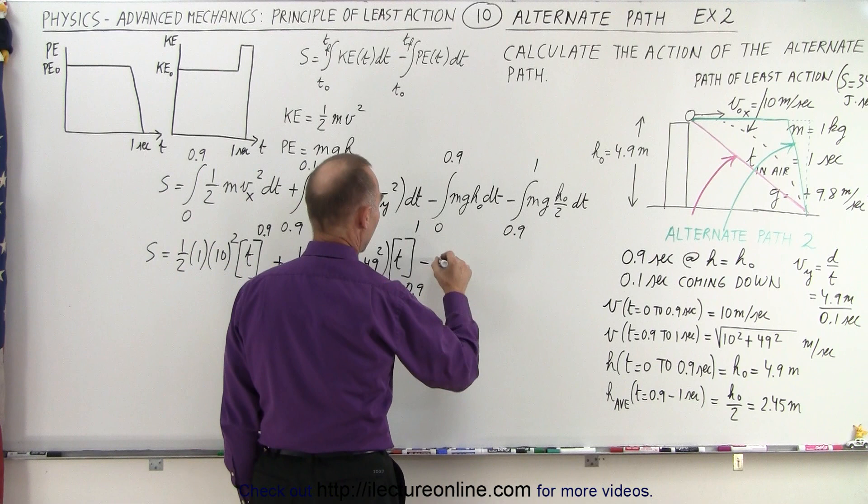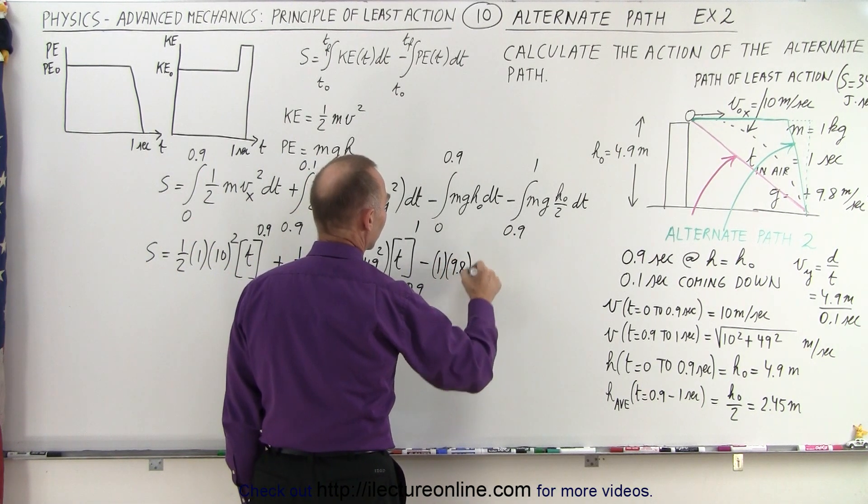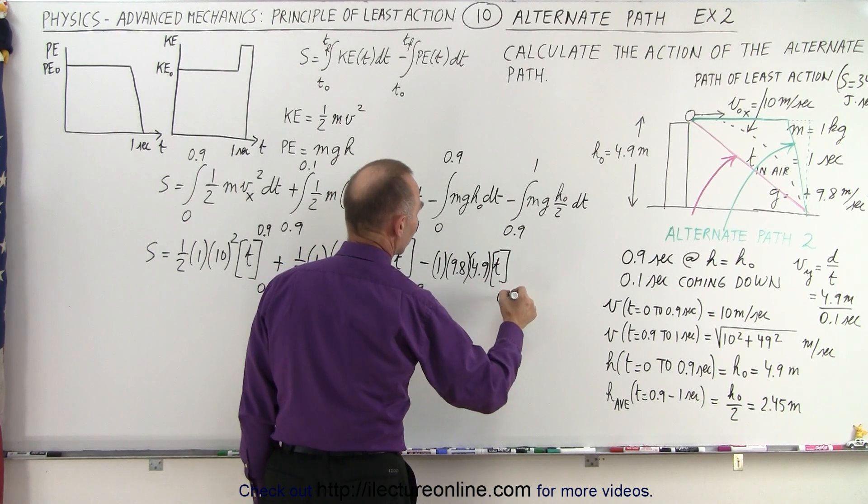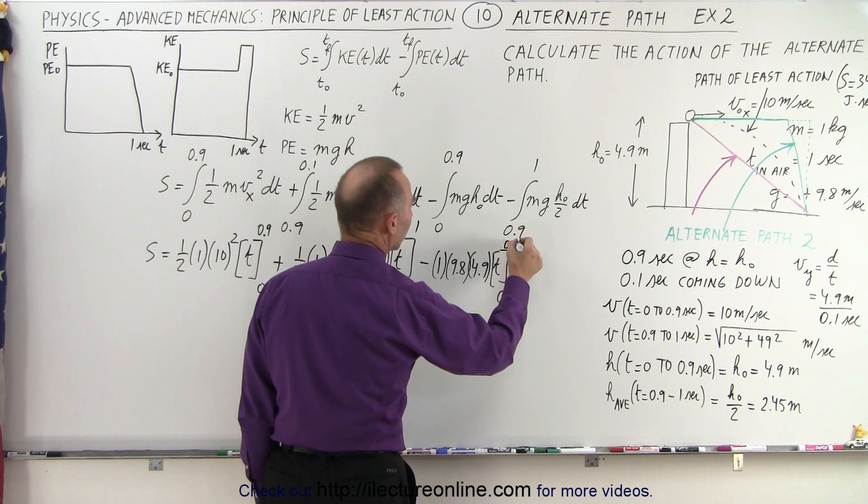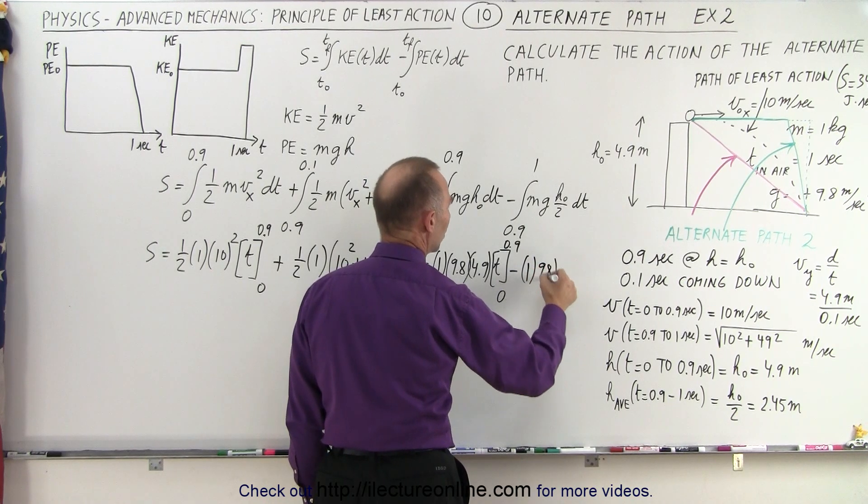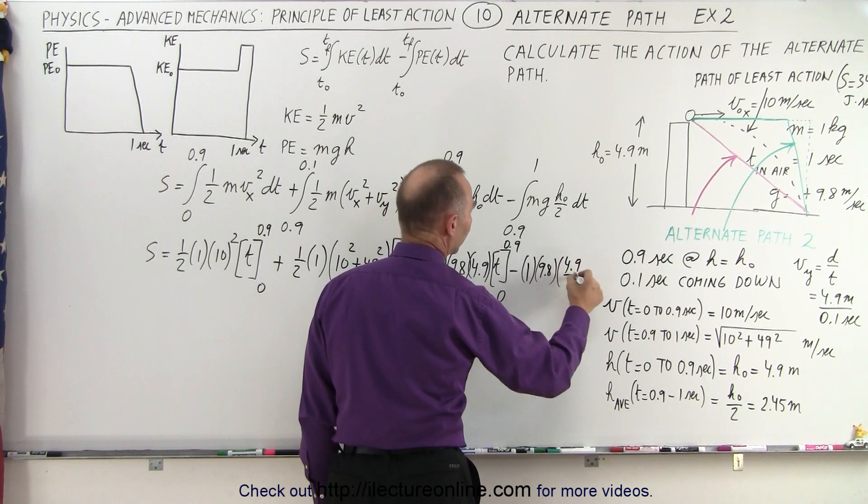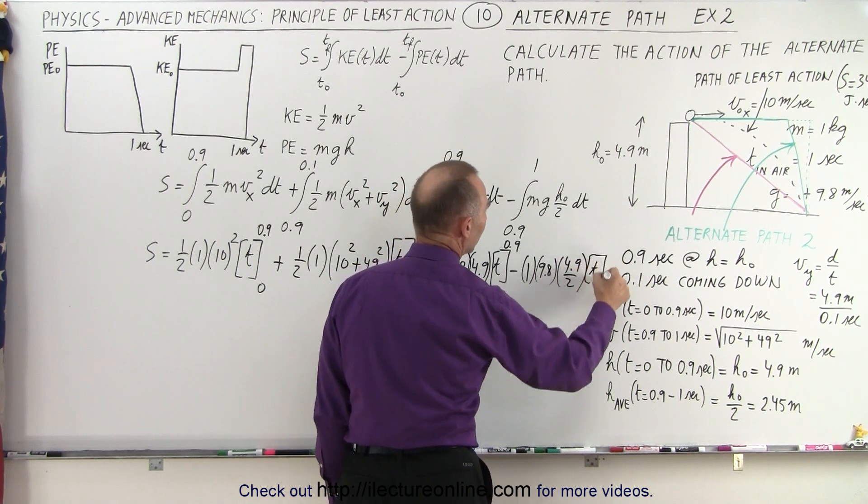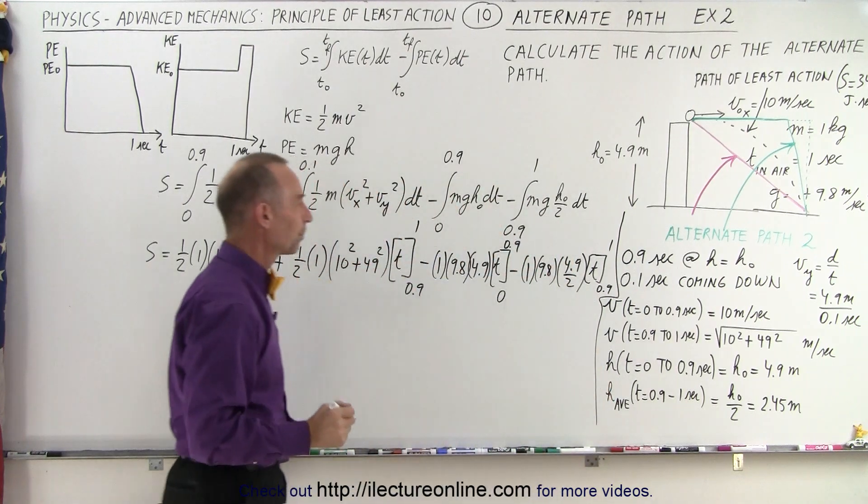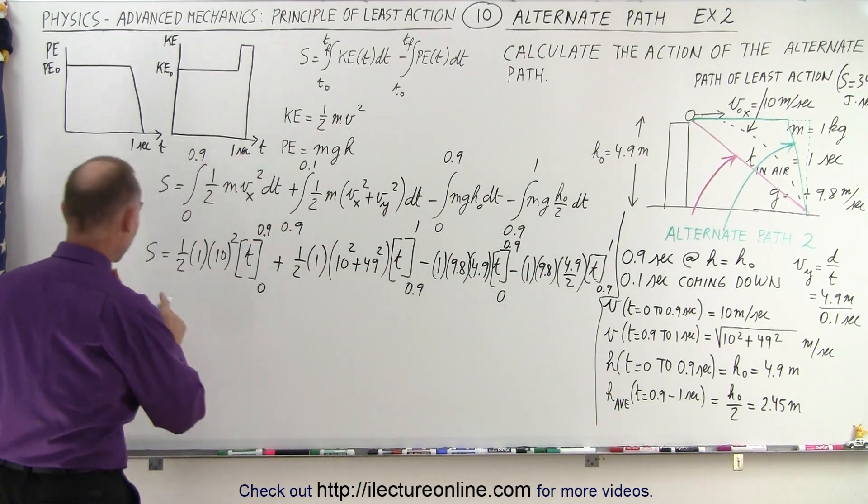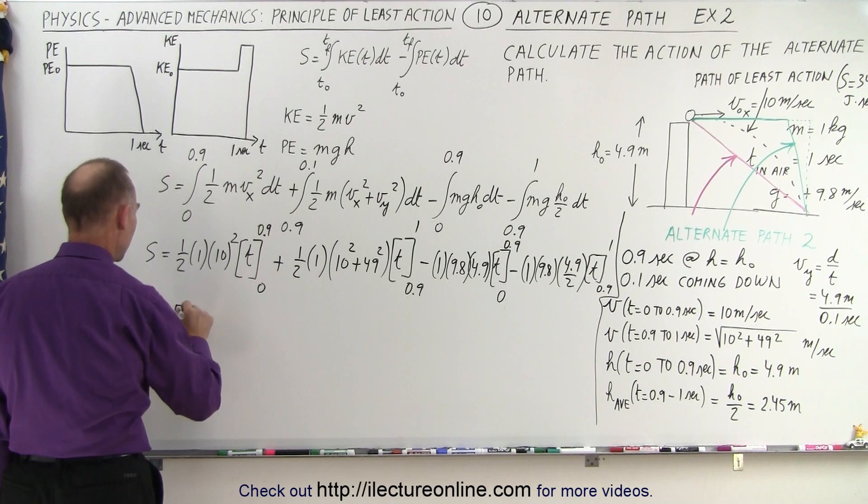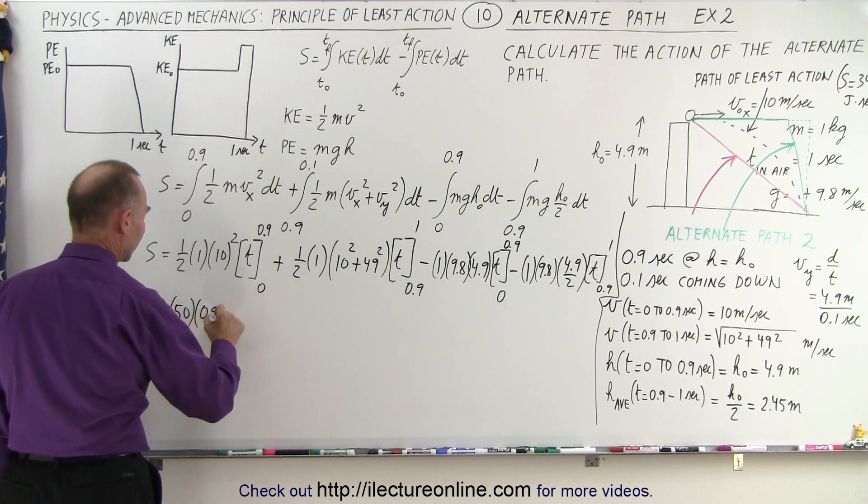Okay, minus the mass times g, 9.8 times the height 4.9 times the time evaluated from 0 to 0.9, and then minus mass times 9.8 g times the average height, which is 4.9 divided by 2, to evaluate it from t going from 0.9 to 1. Wow, that's a little crowded here, so make sure we don't get confused. Okay, let's figure out what those numbers are. So s equals, so that's 0.9 times all this, that's 100 divided by 2, which is 50, multiplied times 0.9 plus.